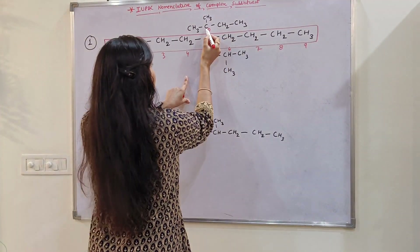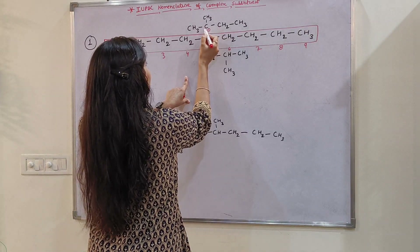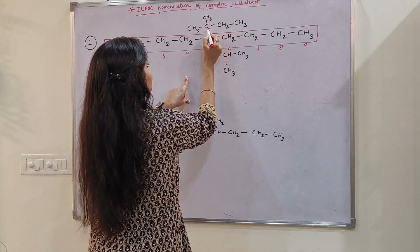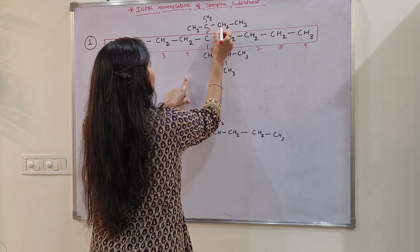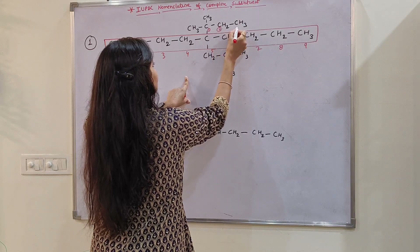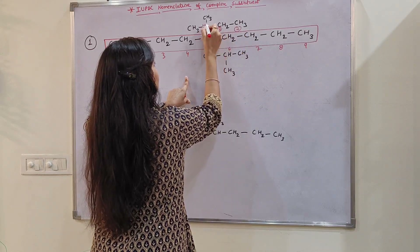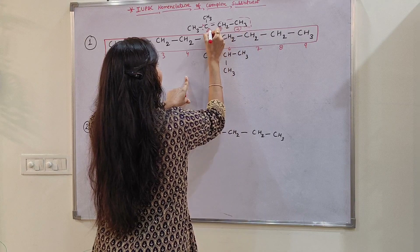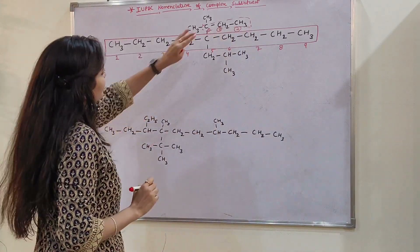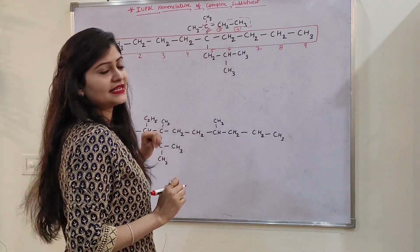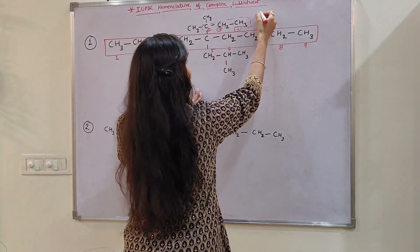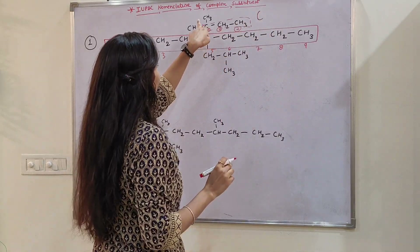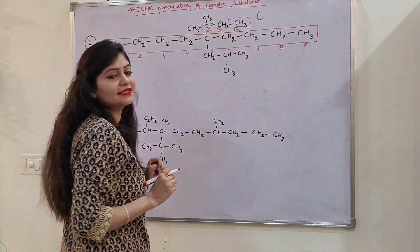So if we go this side, then 1, 2. If we go here, then 1, 2. If we go this side, then 1, 2, 3. We have to get the longest chain of carbon. We have to select it. Now what is the next step? We have to write the name. This is our longest chain — it is 3 carbons long. This 3-carbon chain has some other substituent.